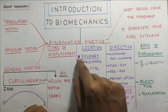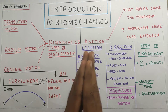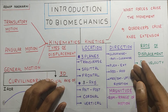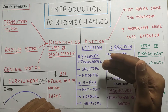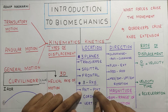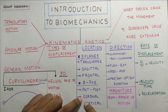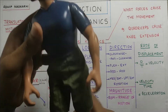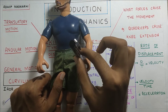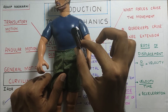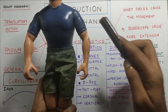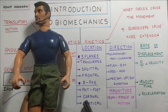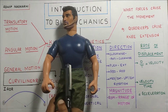Now that we have discussed types of displacement, let us move on to location — that is, where the movement is taking place. Movement can take place around any of the three axes: the antero-posterior axis, the coronal axis, and the vertical axis. The antero-posterior axis passes from front to back, the coronal axis passes from side to side, and the vertical axis passes from top to bottom.